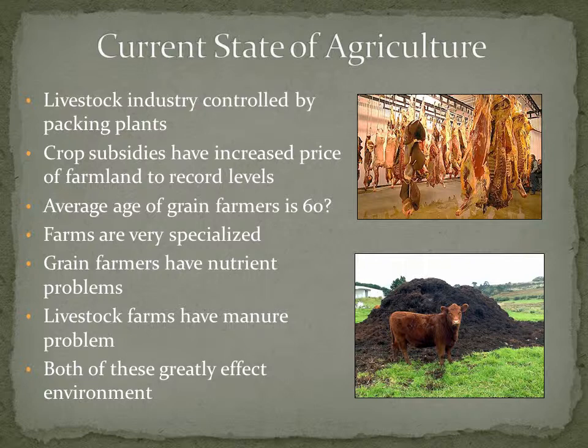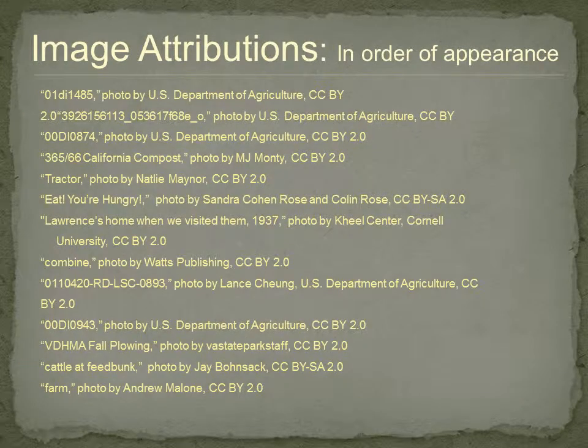As for the current state of agriculture, the livestock industry is really being controlled by the packing plants. They want genetics that are all the same so all animals are the same size, making processing easier. Crop subsidies have increased the price of farmland to record levels. Our farmers are getting old — the average age of the grain farmer is around 60, and who's going to take their place? Grain farms are pulling nutrients off the field year after year, while livestock farms have so much manure that it's become an environmental problem. Both have affected the environment in a negative way.